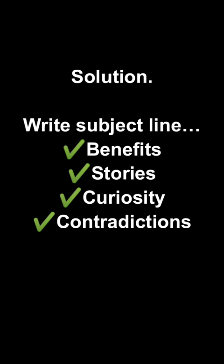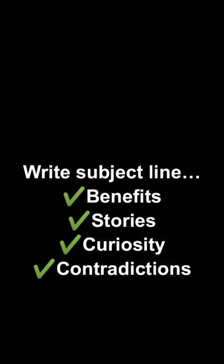The next mistake is weak openers. An opener is the first sentence in your email and it's very important — it determines whether people continue reading or close your email. The very first line should make them want to read on. How should you write openers? The same way you write subject lines: use benefits, stories, curiosity, and contradictions. Your opener can be a continuation of the subject line or something totally different, but make sure it's interesting enough to keep people reading.